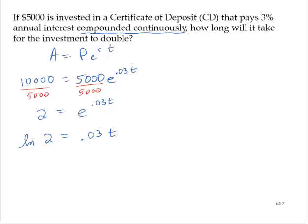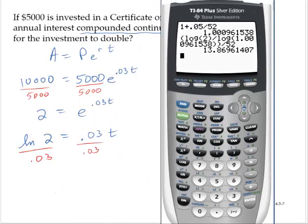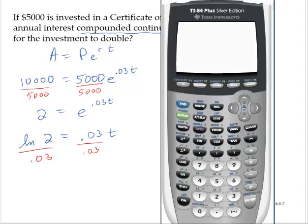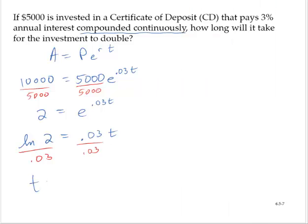And then dividing through by 0.03, calculator time. Natural log of 2, close off the natural log, divide by 0.03, gives 23.1. So t is approximately 23.10.